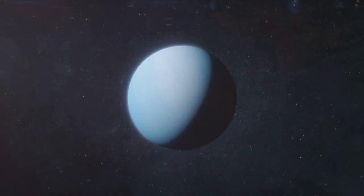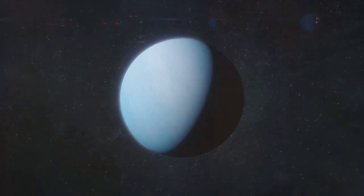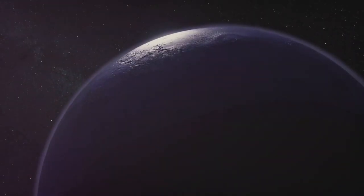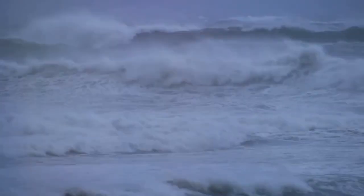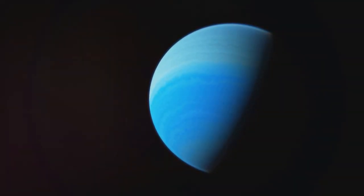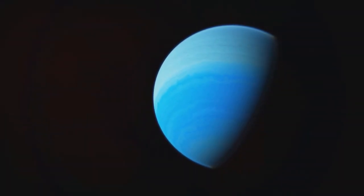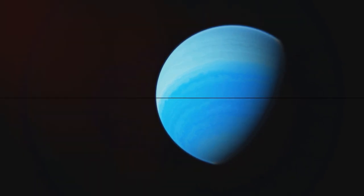The wind on Neptune is a force to be reckoned with. It whips around the planet at speeds that can reach up to 1,240 miles per hour. That's faster than the speed of sound on Earth. This supersonic wind is three times faster than the strongest winds ever recorded on our planet. With winds that can reach speeds of up to 1,240 miles per hour and storms as large as Earth, Neptune's weather is truly extreme.